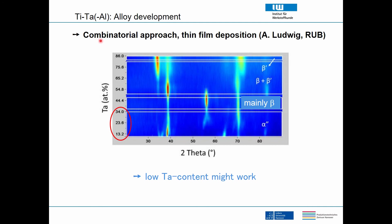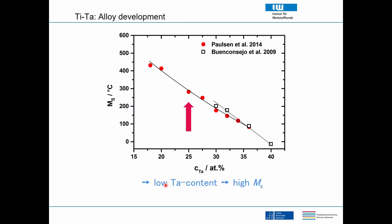We then revised the system. The Bochum group used a combinatorial approach with thin film deposition, superimposing X-ray diffraction spectra for different tantalum contents. For the shape memory effect you need the martensite — called the alpha double prime phase — which appears at fairly low tantalum contents. The idea was that tantalum reduction might still give a shape memory effect, and when we tested those materials it actually worked.